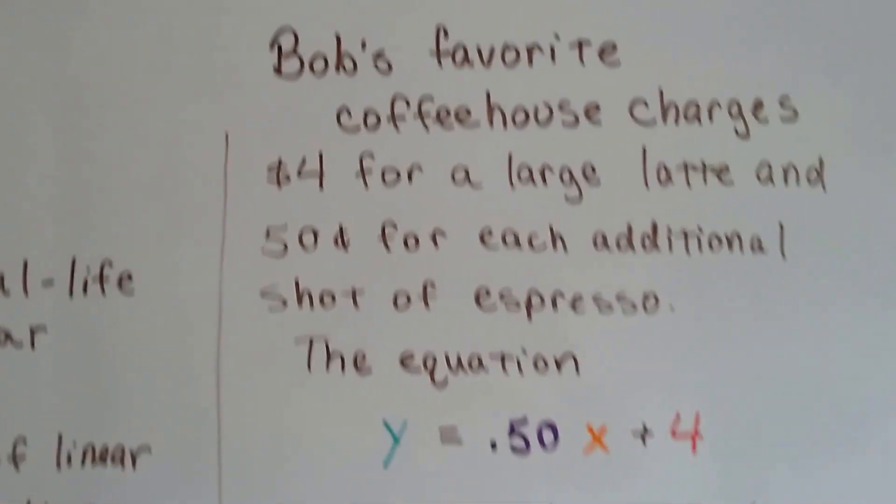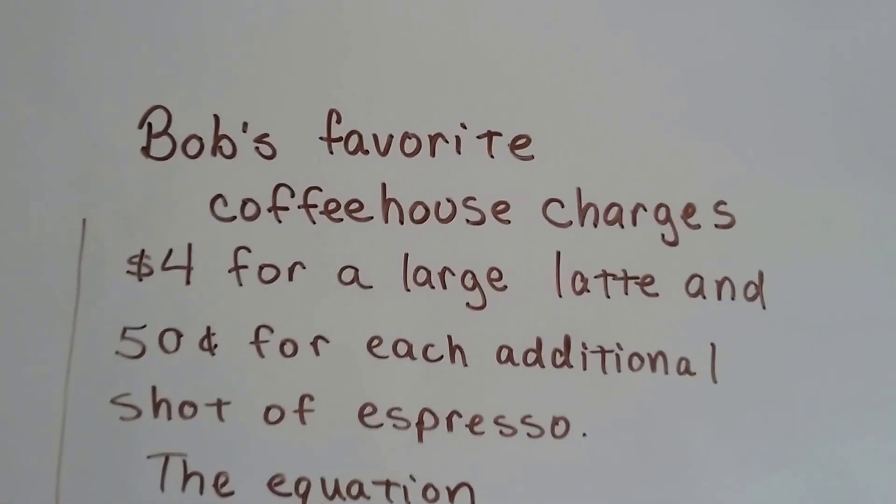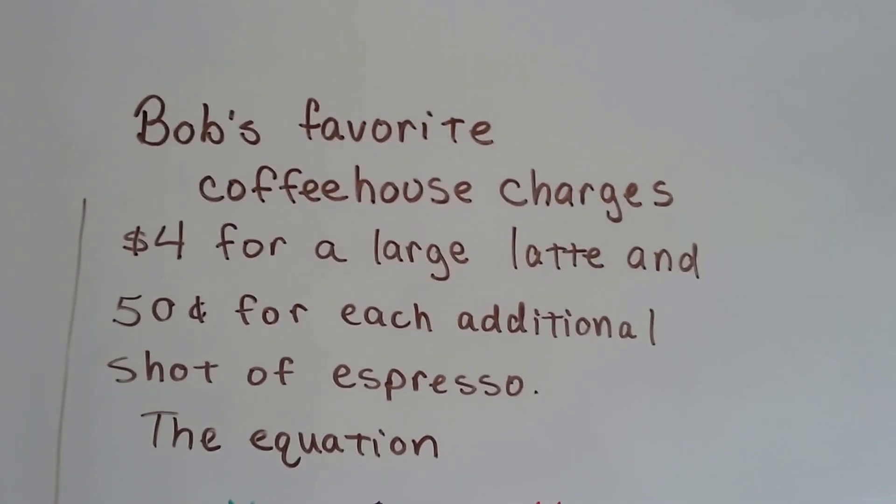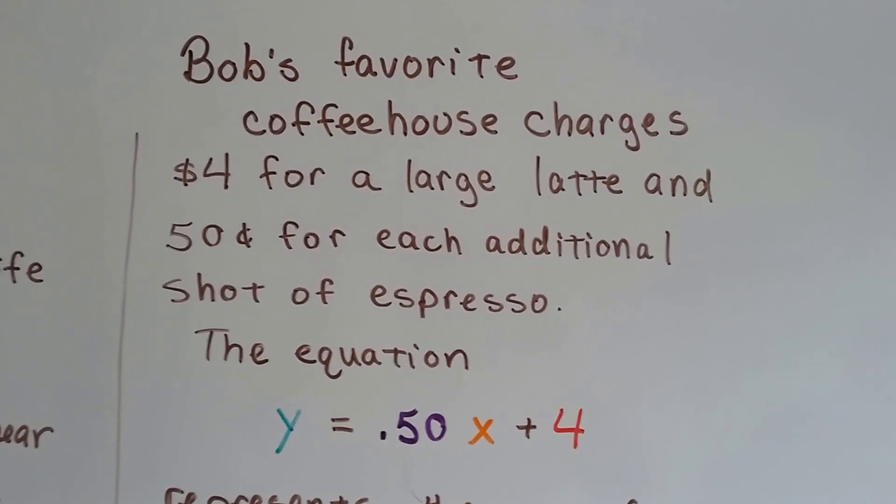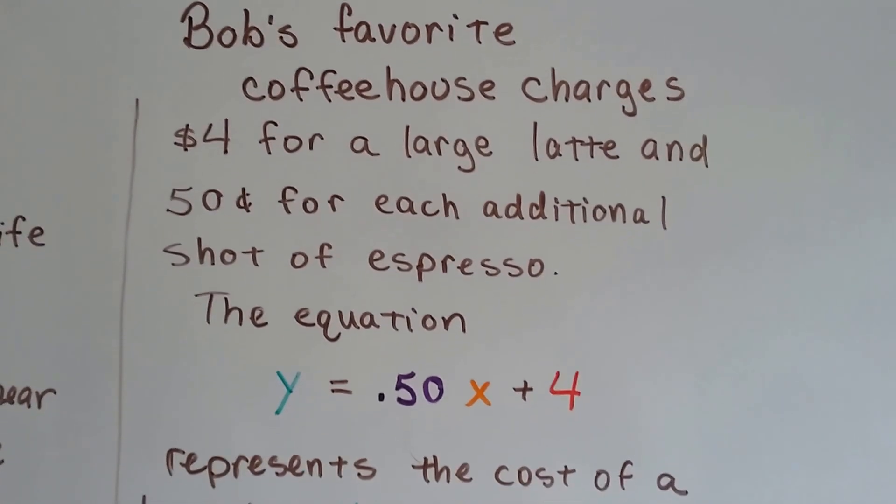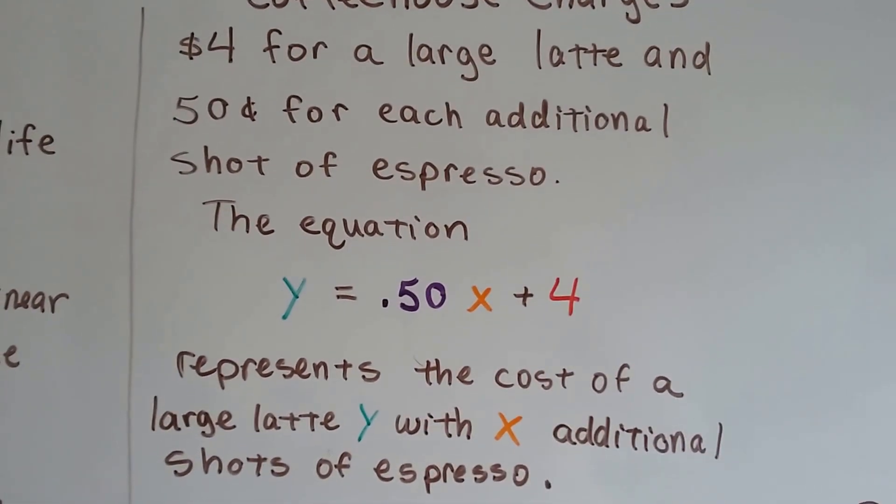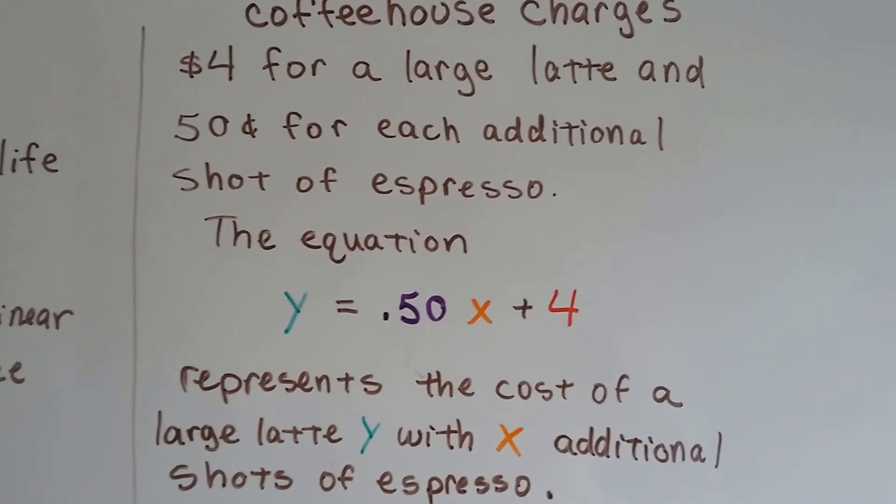Bob's favorite coffee house charges $4 for a large latte and 50 cents for each additional shot of espresso. The equation y equals 0.50x plus 4 represents the cost of a large latte y with x additional shots of espresso.